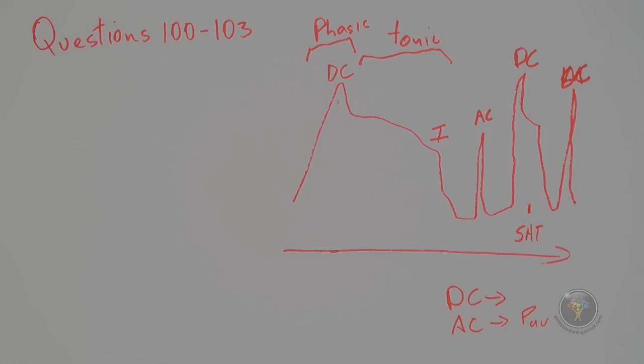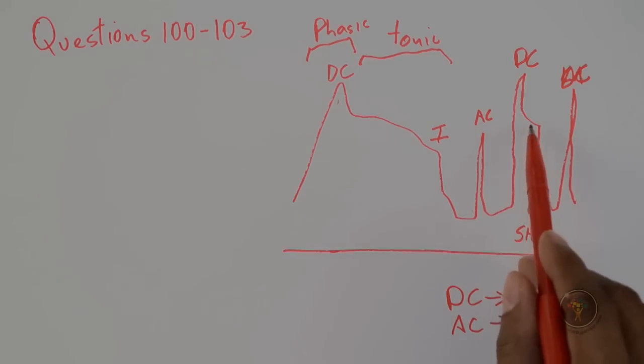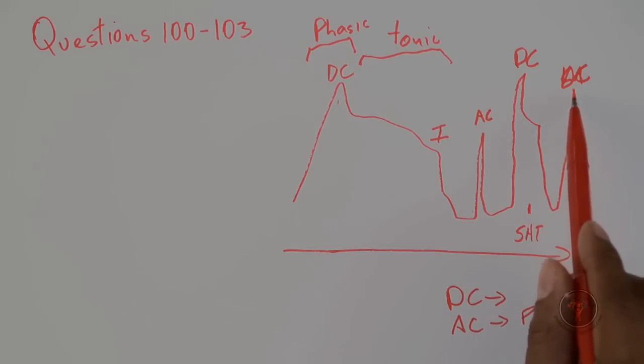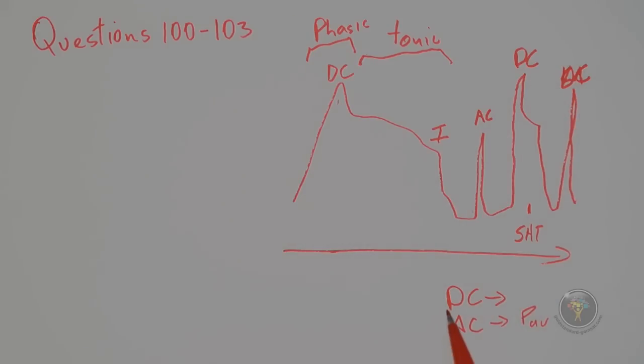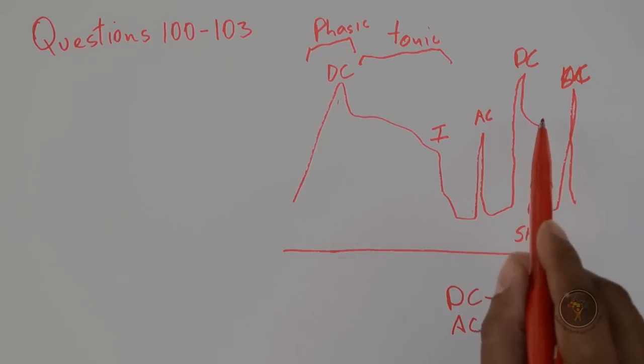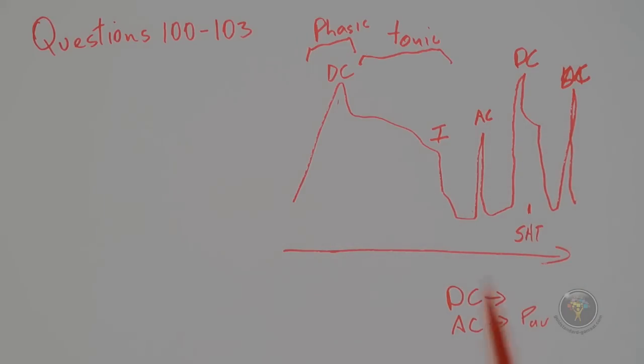So that's answer choice B, because it affected the tonic phase most significantly. Because don't forget the question is most strongly, because yes I do agree that it seems to affected the phasic part a little bit because the phasic part went down a bit here. But the most significant element is that the tonic part is absent here and the tonic part is absent here, and so this is an inhibitory influence on that contraction, and that is exactly what answer choice B is saying.